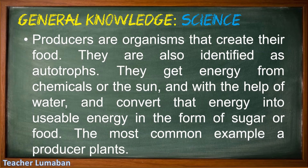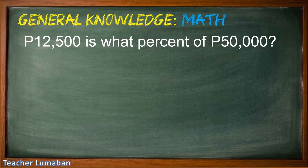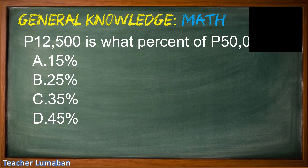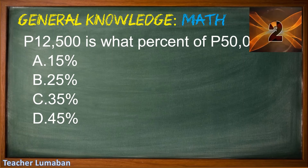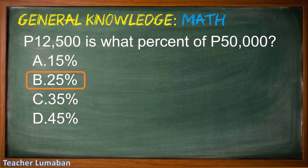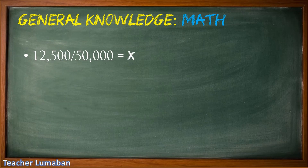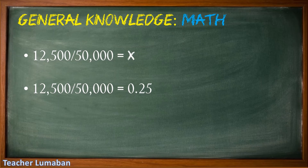12,500 pesos is what percent of 50,000 pesos? Letter A, 15%; Letter B, 25%; Letter C, 35%; Letter D, 45%. Please choose the suitable answer in 5 seconds. 5, 4, 3, 2, 1. The correct answer is Letter B, 25%. 12,500 divided by 50,000 equals 0.25, which equals 25%.